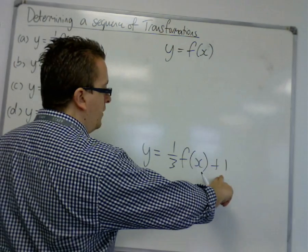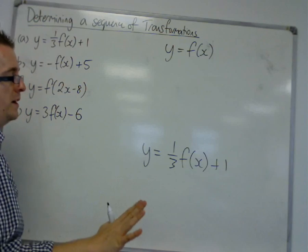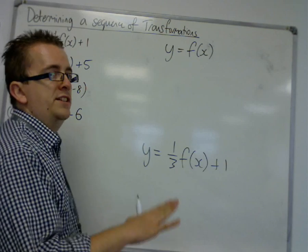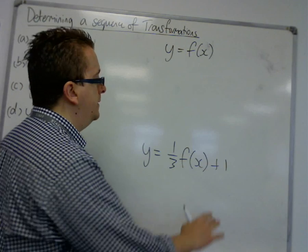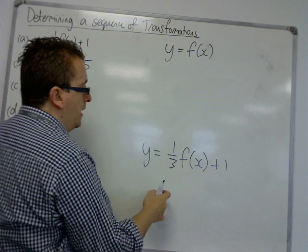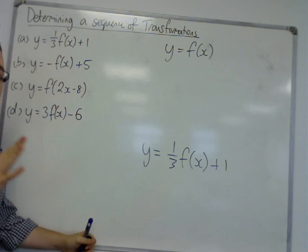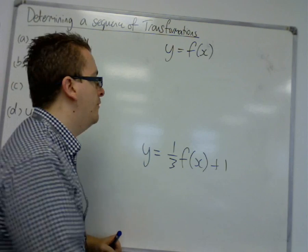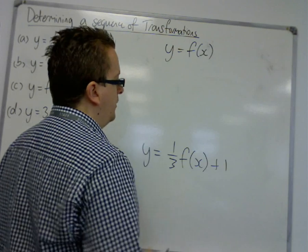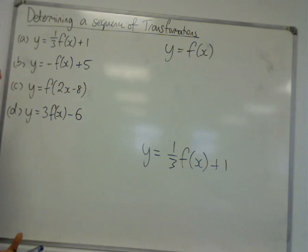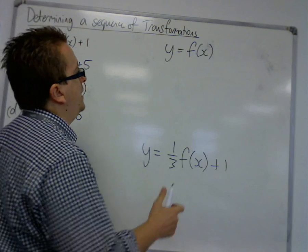Now, the plus one on the end is telling me that there may well have been a translation by the vector 0, 1. And then we've also got this one-third outside the f of x, which means there's a stretch in the y direction by a factor of one-third. So, it's really determining which one would have come first. So, let's see.